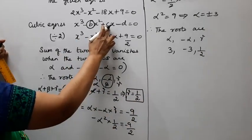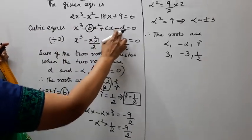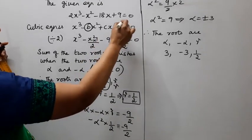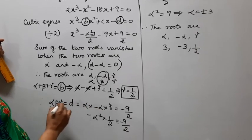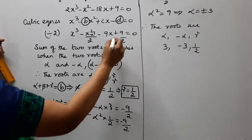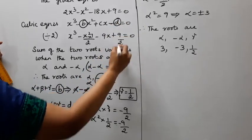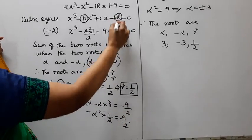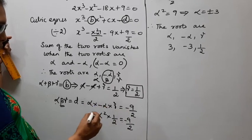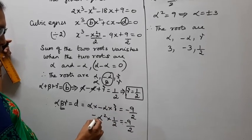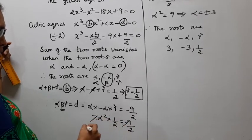Now, c equals alpha·beta plus beta·gamma plus gamma·alpha, and d equals alpha·beta·gamma. Using d: alpha times (minus alpha) times gamma equals minus 9/2. Substituting gamma equal to 1/2, we get alpha times (minus alpha) times (1/2) equal to minus 9/2.